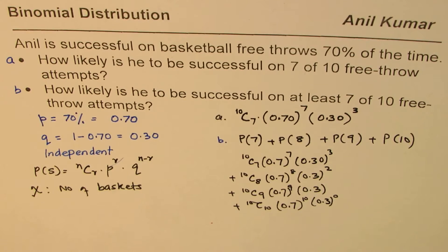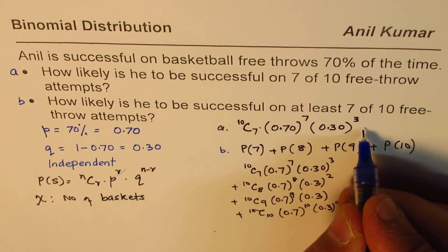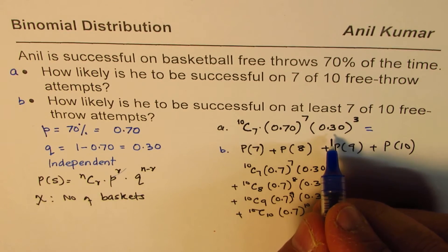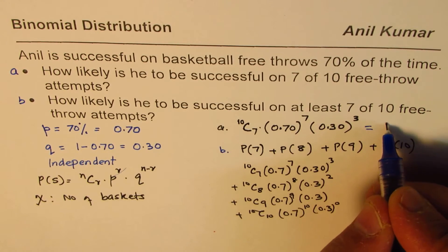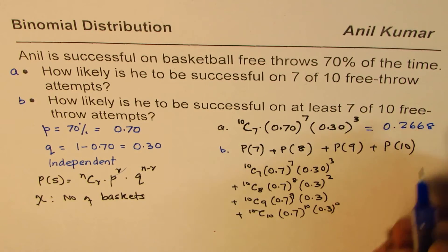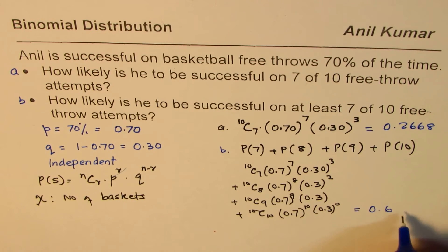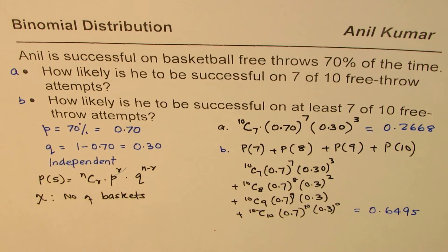So this is Part B. I hope that helps you figure out how to do such questions. Using a calculator, Part A gives 0.2668, and when you add all the terms for Part B, you get 0.6495. Those are the expected answers for this question. Thank you and all the best.